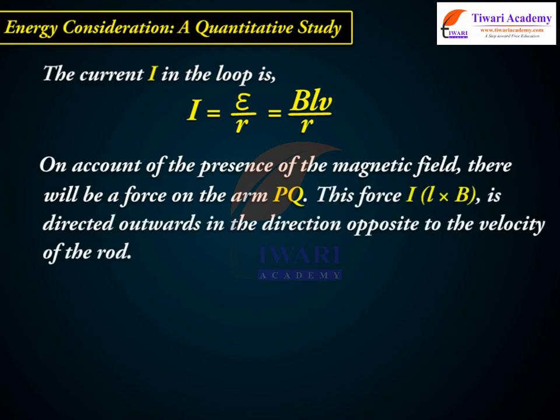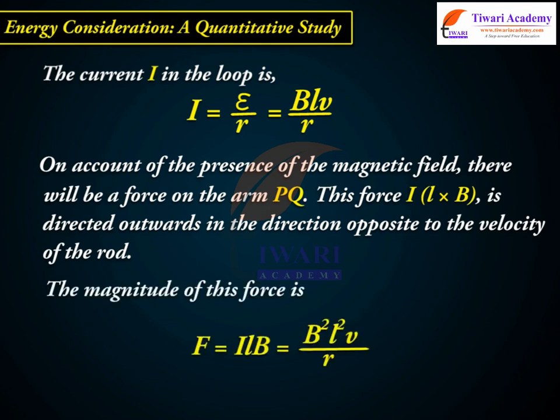This force, IL × B, is directed outwards in the direction opposite to the velocity of the rod. The magnitude of this force is F = ILB = B²L²V/R.